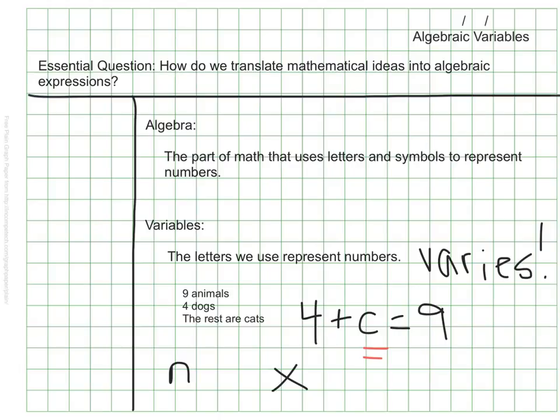X marks the spot. Because of this, when we want to multiply, we don't use the multiplication symbol X anymore. That would be very confusing. We'll see what we can do instead in just a minute.